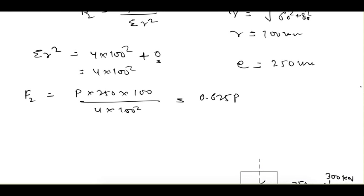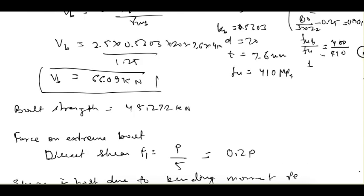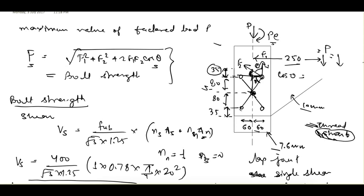We have obtained F1 and F2. Now we need cosθ for the equation. For the extreme bolt, F1 acts in one direction and F2 acts due to the moment. Drawing the geometry: the angle θ gives cosθ = 60 / 100 (adjacent over hypotenuse), so cosθ = 0.6.